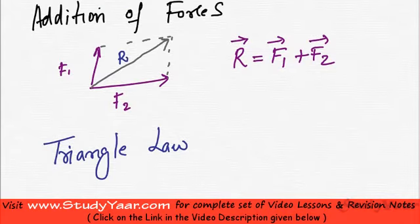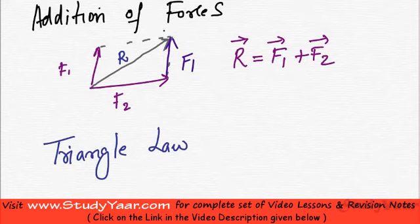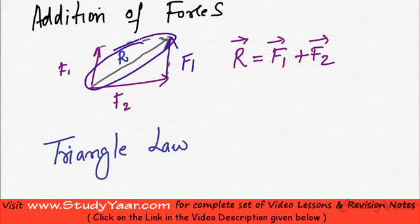So let us suppose I take this F1 and I put it over here. I bring this F1 and I put it over here. So this becomes a triangle, right. Where this is F2, this is F1 and this is the resultant which we already know.